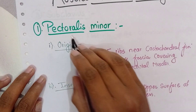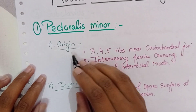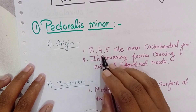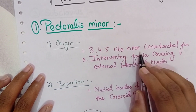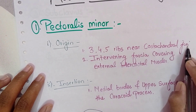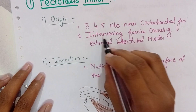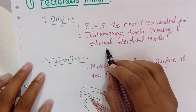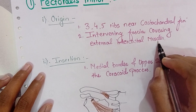Pectoralis minor. The origin of this muscle is the third, fourth, and fifth ribs near the costochondral junction, whereas interweaving fascia covering the external intercostal muscles.